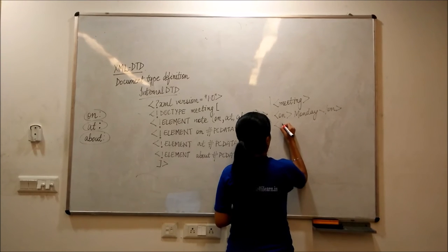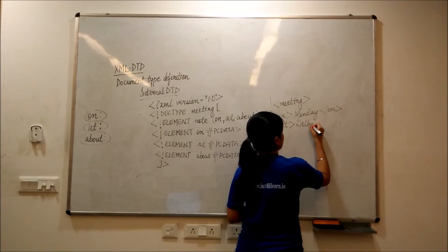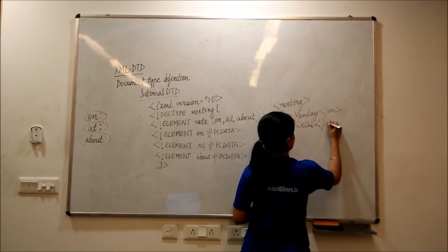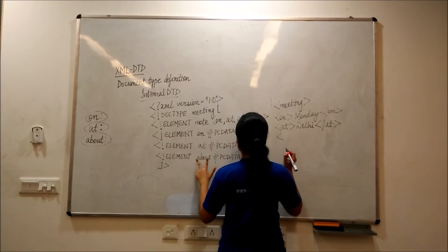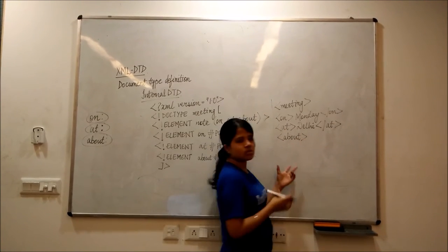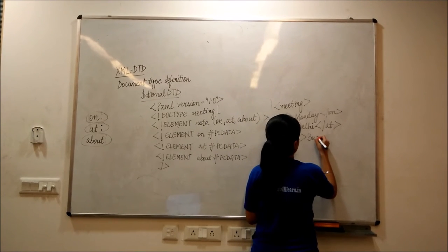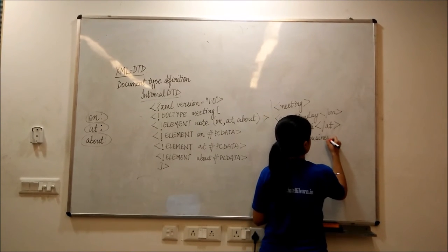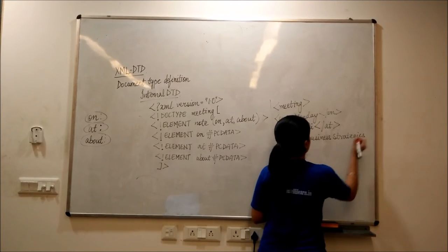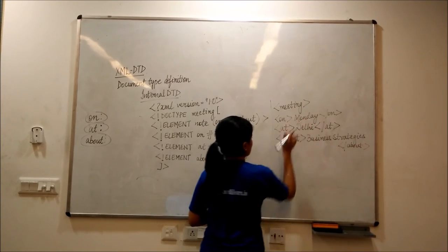Followed by at. Suppose this meeting is taking place at Delhi. Then, it's about. And since the main agenda for conducting this meeting is about business strategies. Then, close this about tab. And, automatically, close your meeting tab.